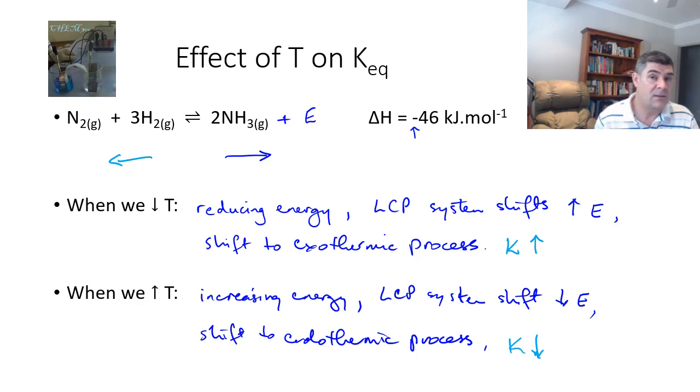So, takeaway message: equilibrium constant is temperature dependent, and you will be given the value of the temperature. Any change in the temperature of the system will shift that system to favor the exothermic reaction if we drop the temperature in order to release more energy, or it will shift to the side that is endothermic when we increase the temperature in order to absorb that excess energy. Again, a few practice questions and I'm sure this will all become clear. Thanks for watching.